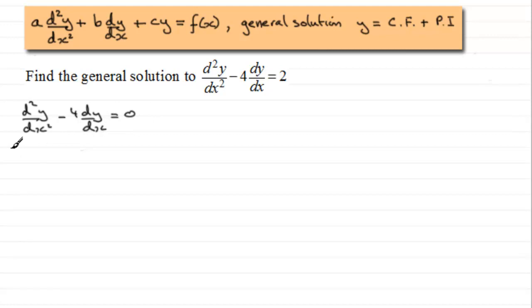And for this we would build up our auxiliary equation. That's where we just replace d²y/dx² with m², and then we have minus 4, and we replace dy/dx with m, and this would equal zero.